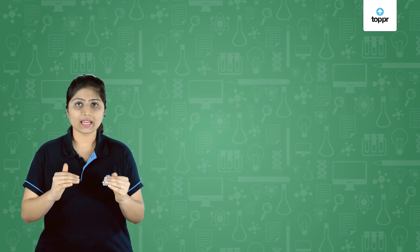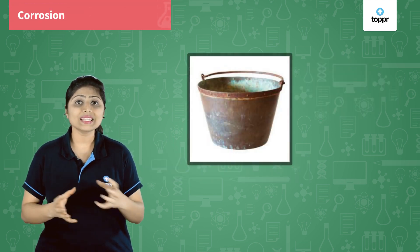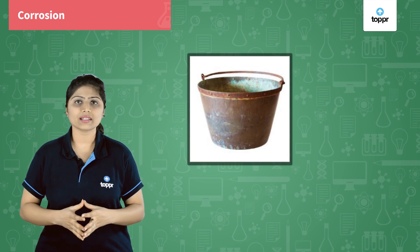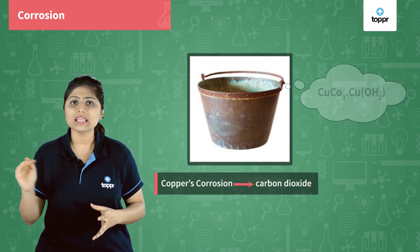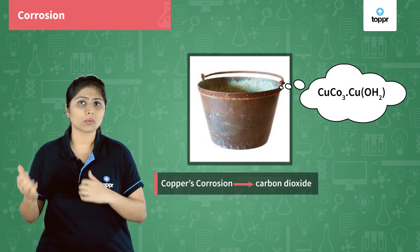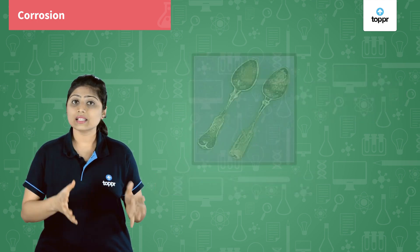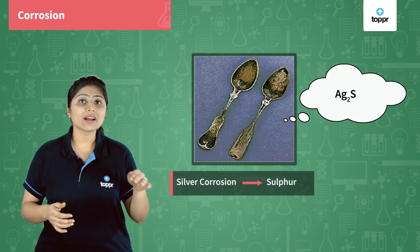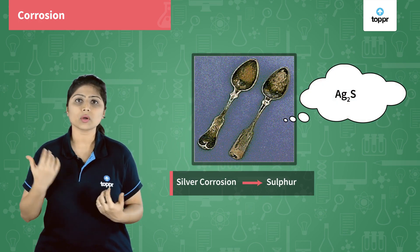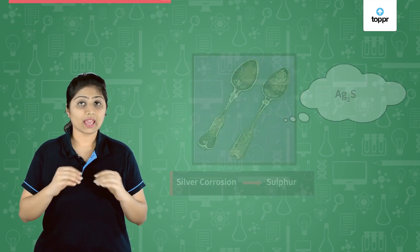Not only iron gets corroded, but even copper and silver get corroded. Copper gets corroded because of carbon dioxide, and a green colored layer is formed on copper. Whereas silver gets corroded because of sulfur, and a black colored layer is formed on silver.